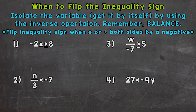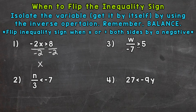Let's jump into number one, where we have negative 2 times x is greater than or equal to 8. I'm actually going to do this one incorrectly in order to show you why we flip the inequality sign. We're multiplying x by negative 2, so the opposite is dividing by negative 2. That isolates x, and without flipping the sign, we get x is greater than or equal to negative 4.